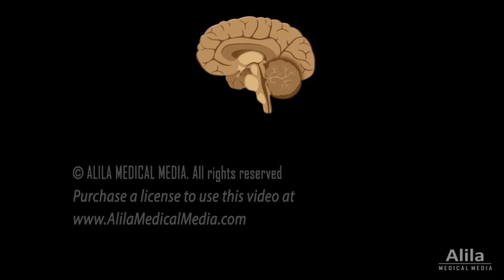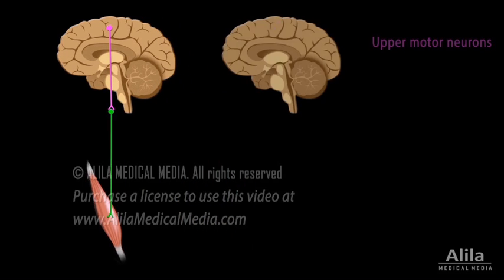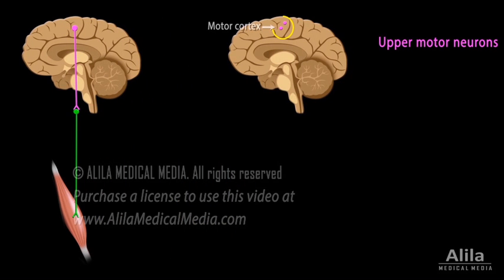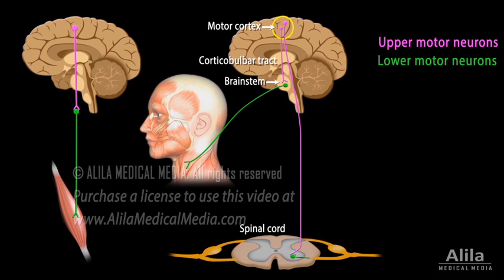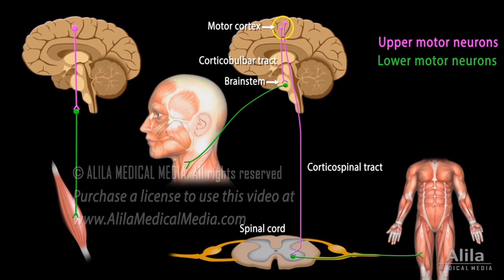Usually, motor instructions from the brain are transmitted to the muscles via two neurons. An upper motor neuron starts in the primary motor cortex of the cerebrum, and a lower motor neuron continues from the brain stem or spinal cord, forming the corticobulbar and corticospinal tracts respectively.